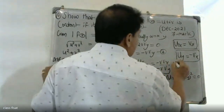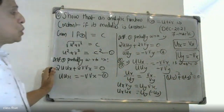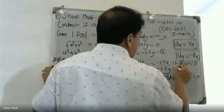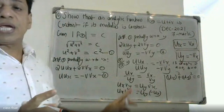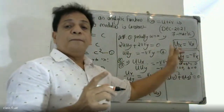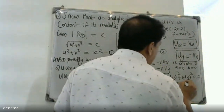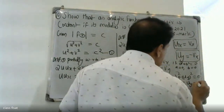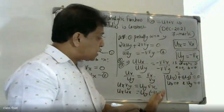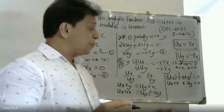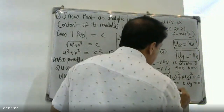From this, uy = 0. Similarly, since u² + v² = c², and applying the results, we get ux = 0 and uy = 0. Since both partial derivatives are zero, u is a constant.